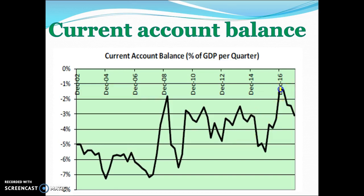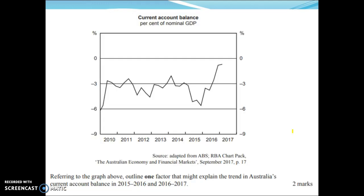You can see here that the current account balance has started to trend upwards — the deficit has started to increase in the last year. This is a question from last year's exam: referring to the graph, outline one factor that might explain the trend in Australia's current account balance from mid-2015 to mid-2017. We're looking at a period showing a decrease in the current account deficit.